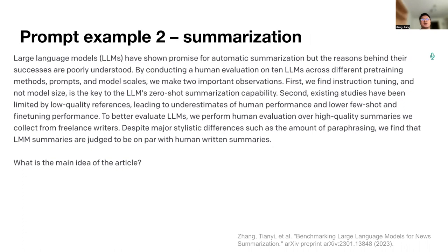The second example is summarization. We give the model the abstract of an article about large language models. This abstract is from the Stanford paper benchmarking large language models for news summarization, which shows that large language models have on-par performance compared to humans in news article summarization. We give it to the ChatGPT model and ask what is the main idea of the article.